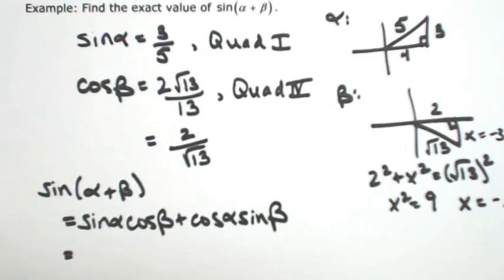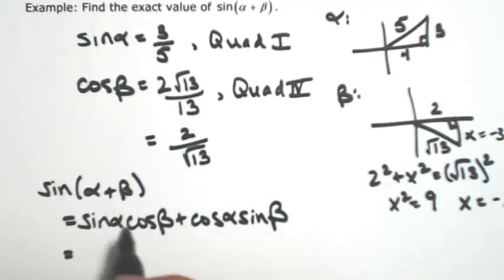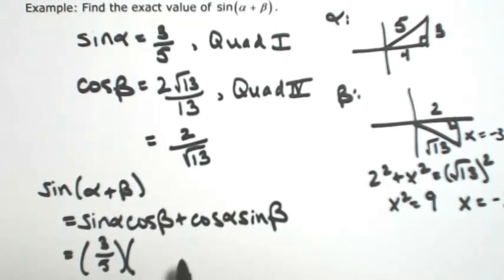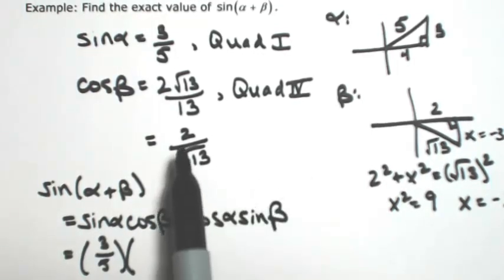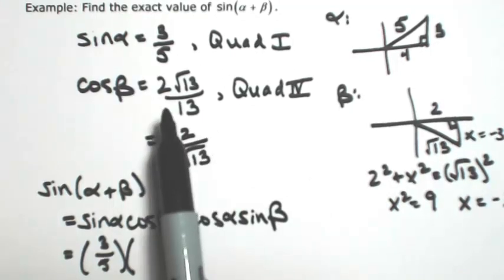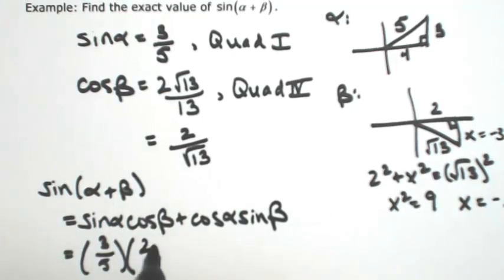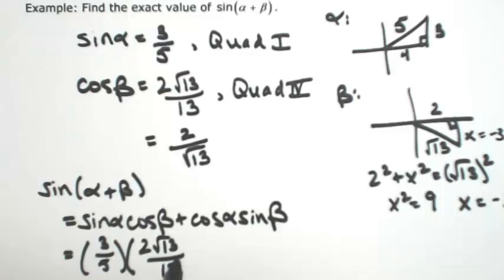Okay, so from our picture we can figure all of this out. Sine of alpha was actually given as 3 fifths. Cosine of beta was also given as 2 over root 13. I think I'll take it back to the rationalized version. We're going to have to rationalize it anyway.